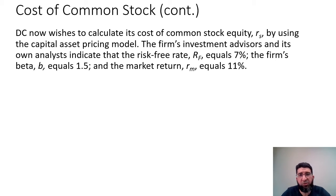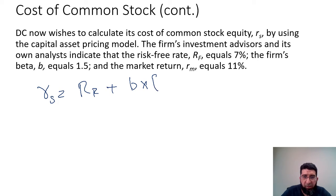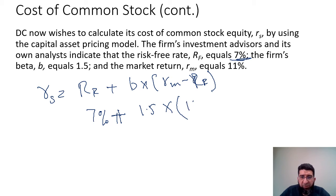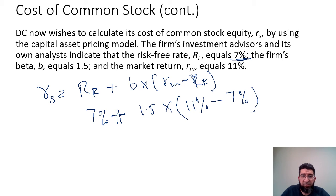Let's do a CAPM example. DC wishes to calculate its cost of common stock equity RS using the Capital Asset Pricing Model: RS equals RF plus B times (RM minus RF). The risk-free rate RF is 7%, the firm's beta is 1.5, and the market return RM is 11%. So RS equals 7% plus 1.5 times (11% minus 7%), giving RS equal to 13%.